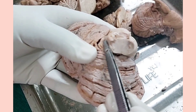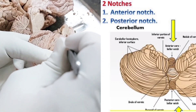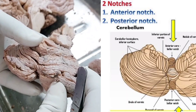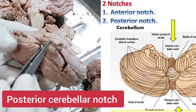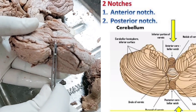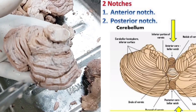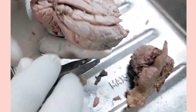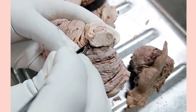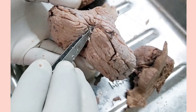At the anterior end, there is a notch here adjacent to the fourth ventricle — this is the anterior notch, which is wide and shallow. The posterior end has the posterior cerebellar notch, which is narrow but deep. It is identified by its depth and narrow width.